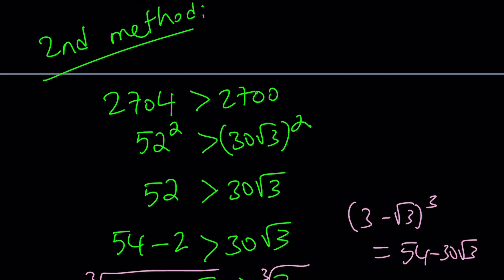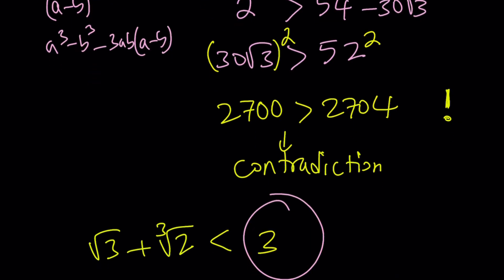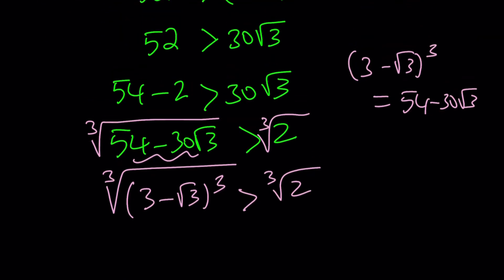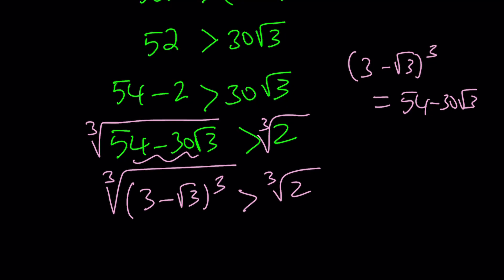If you go ahead and cube 3 minus root 3, this is going to give you 54 minus 30 root 3. Where does that come from? Just from the formula that I already told you about, right? But I'm just going to skip that part because that part is fairly easy. So now, from here, if we cube root both sides, we get 3 minus root 3 equals the cube root of 54 minus 30 root 3.